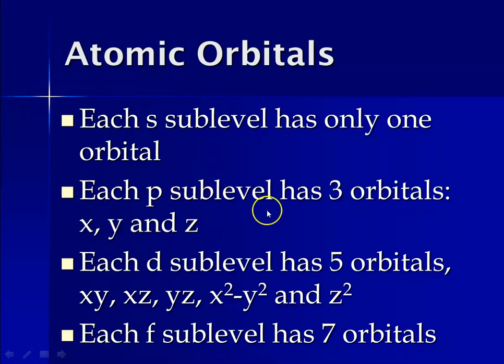Each p sublevel has three orbitals. We can think of it as a p sublevel having three bedrooms, and each of those bedrooms has a bunk bed in it. The p sublevel orbitals are called x, y, and z, and they are located on the x, y, and z axes when you talk about a 3D space.